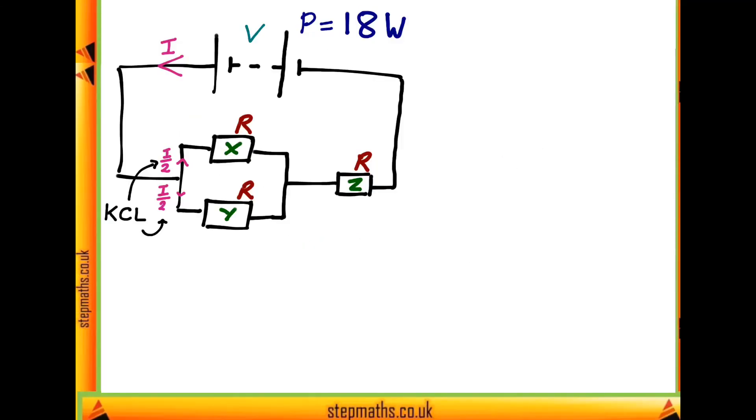Let's look at our circuit again. We're told that our battery produces a power of 18 watts. The equation which comes up most often when talking about electrical power is that the power is equal to the voltage through an element, or across an element, multiplied by the current through an element. This tells us that our battery must have a voltage across it, V, and a current, I.